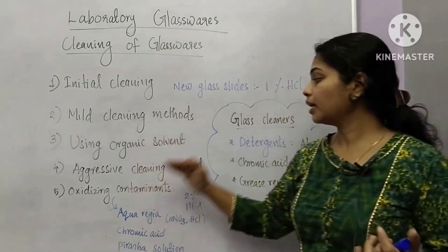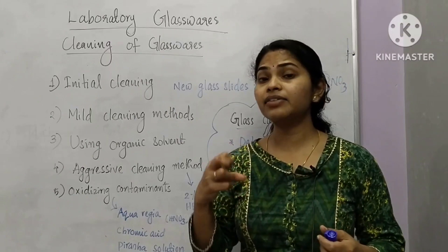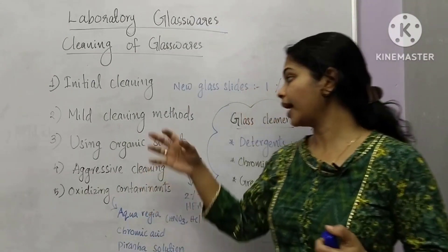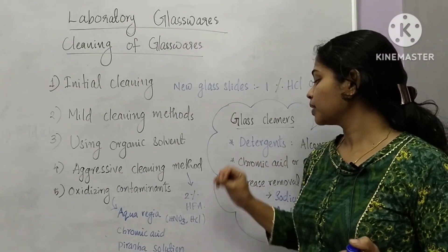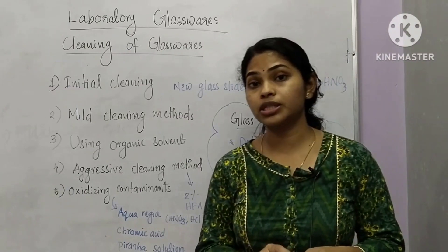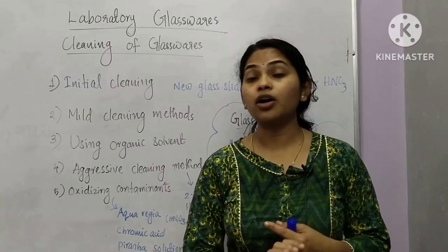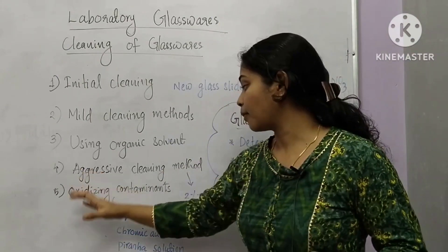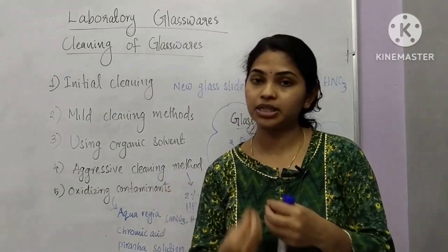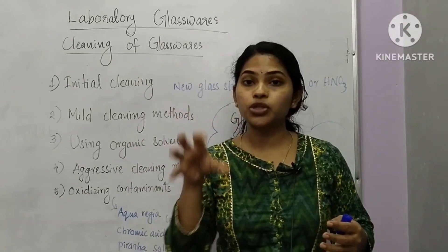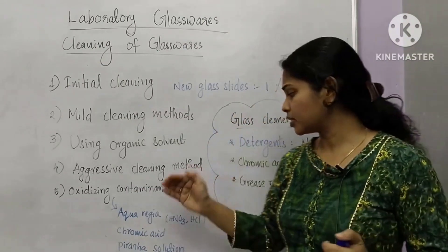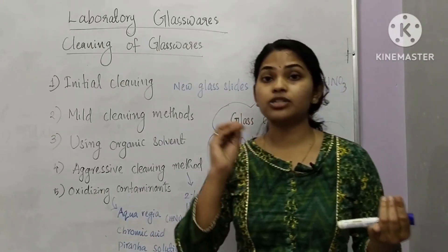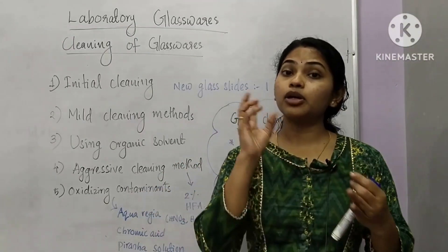Organic solvents are not considered an aggressive cleaning method. If we use organic solvents, we can apply mild heat or agitation. For aggressive cleaning, we use 2–4% hydrofluoric acid to dissolve oxidizing contaminants, along with aqua regia, nitric acid, hydrochloric acid, and chromic acid.